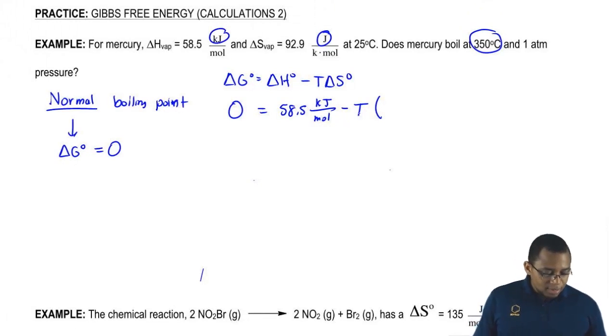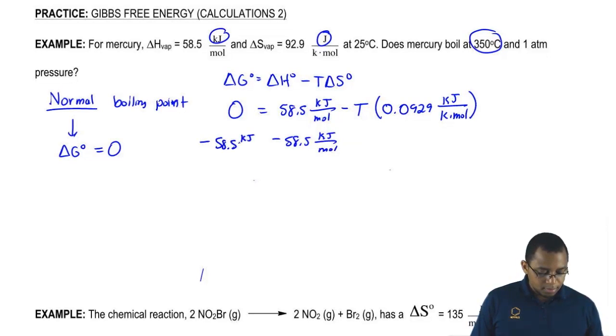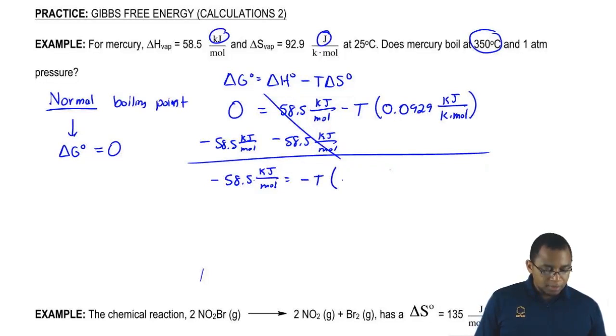So divide that by 1000 gives us 0.0929 kilojoules over K times moles. So we're going to subtract 58.5 kilojoules over moles. So negative 58.5 kilojoules over moles equals negative temperature times 0.0929 kilojoules over K times moles.